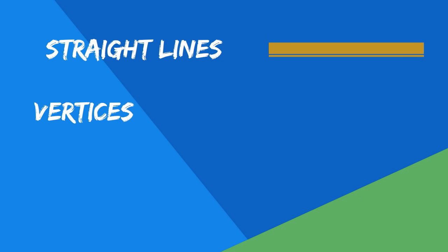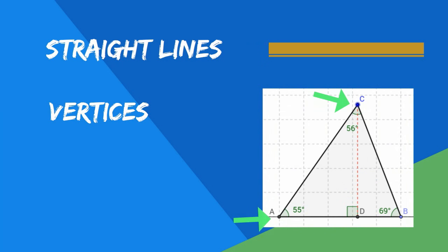Polygons have three parts: straight lines, vertices which are the points at which the lines intercept, and angles formed by the intercepting lines.